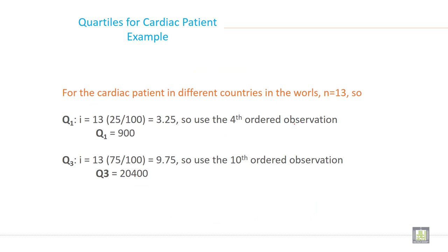Now how can you calculate quartile? What is the procedure? Go to the previous slide regarding cardiac patients in different countries in the world. The number is 13.